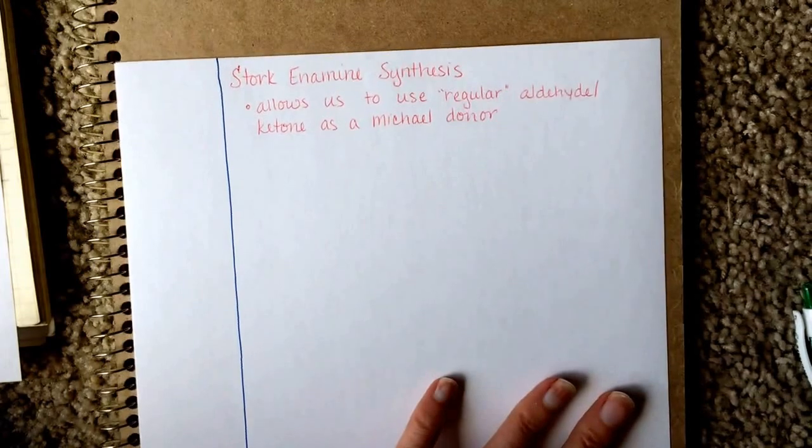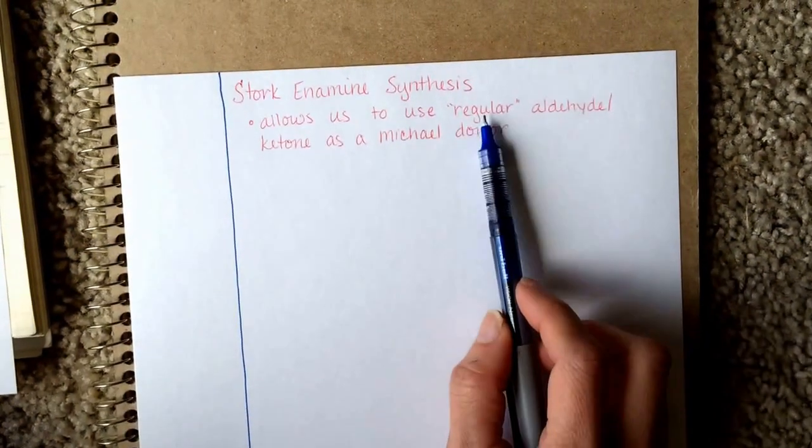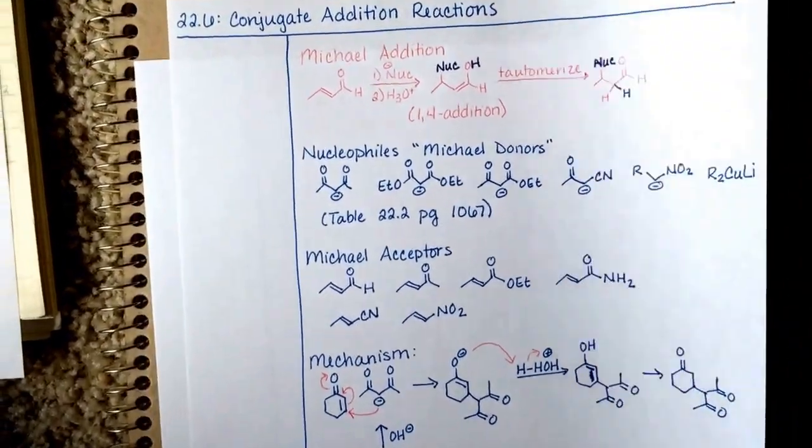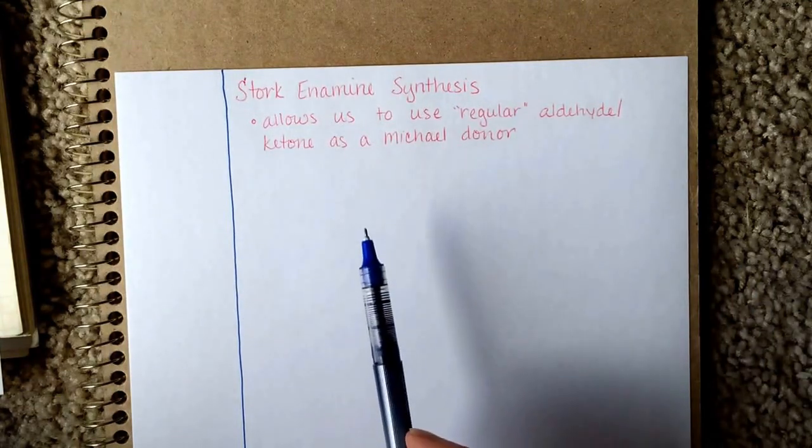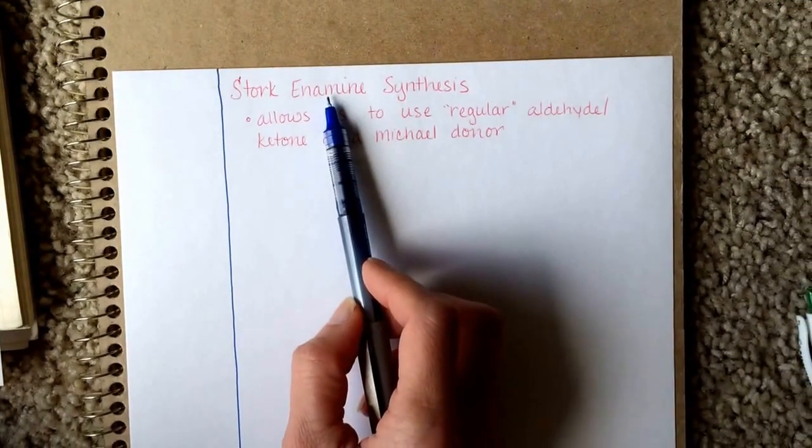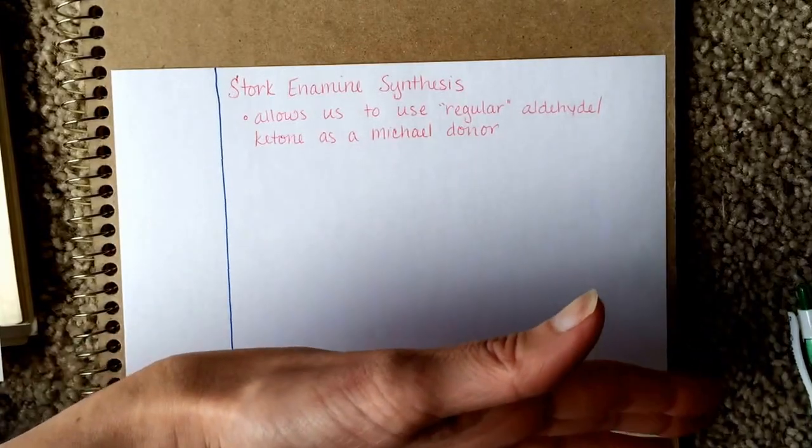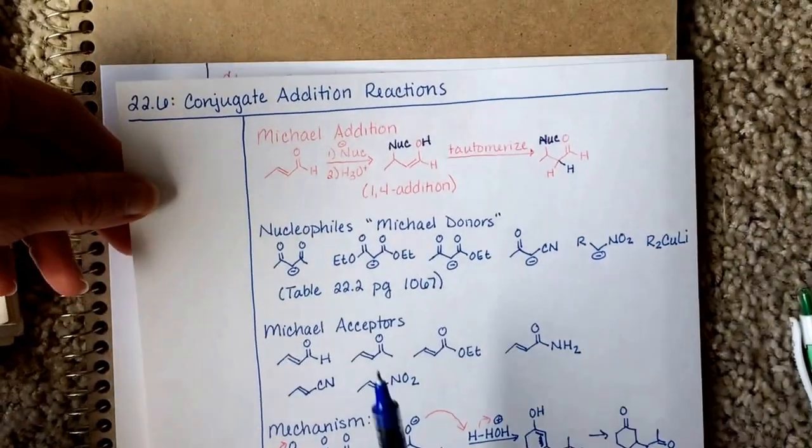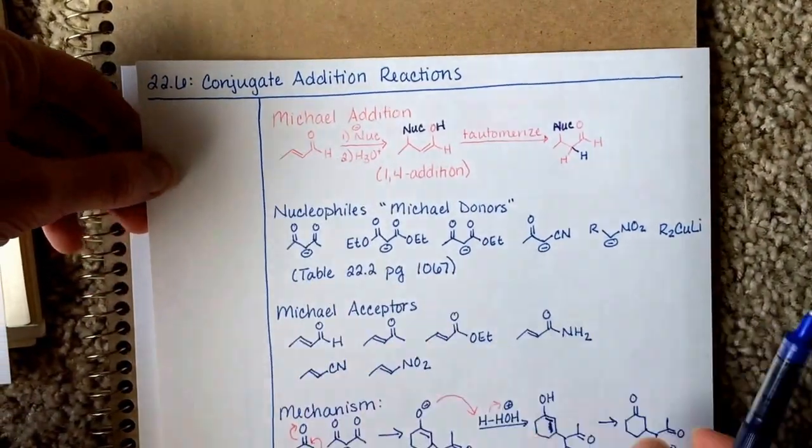What we do have the ability to do is take an aldehyde or a ketone, regular meaning you don't have to have a nitrile group on it, regular aldehyde or ketone, convert it into an enamine, as the name suggests, take the enolate of the enamine, which is a very weak nucleophile, and the enolate of the enamine will attack at the beta site and do the Michael Addition reaction.